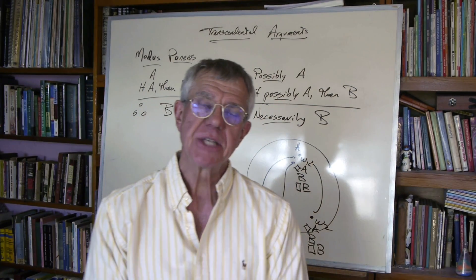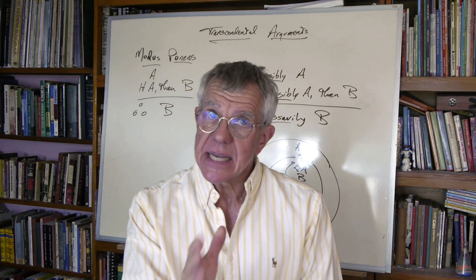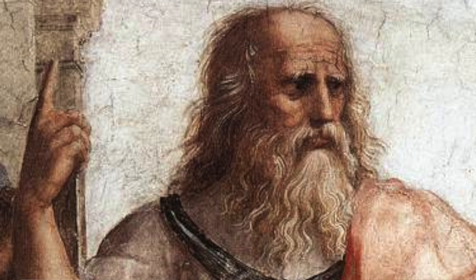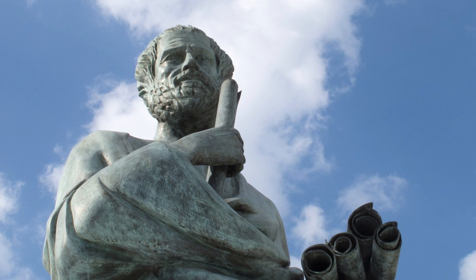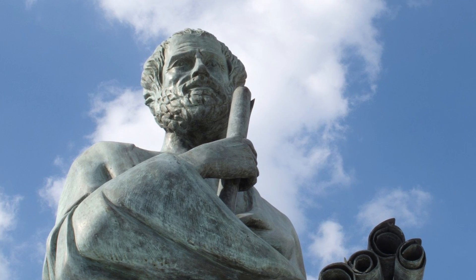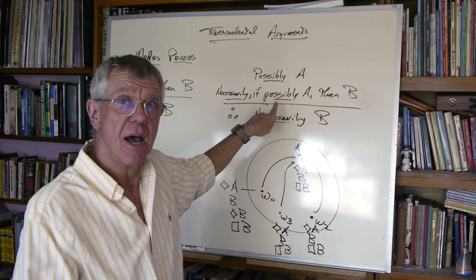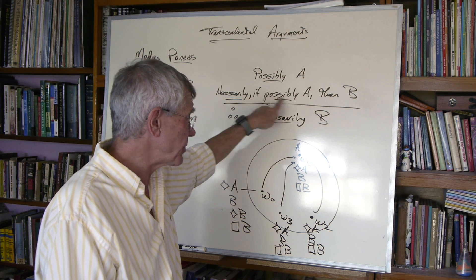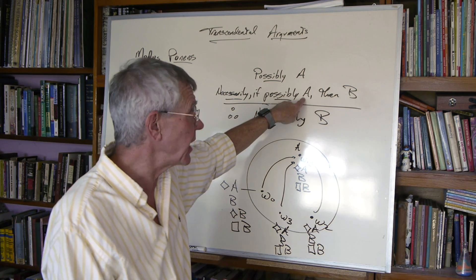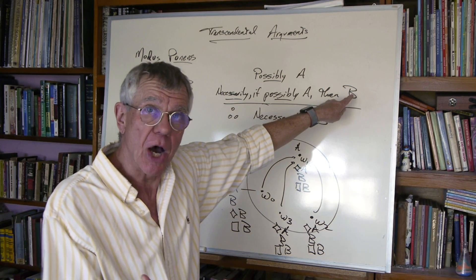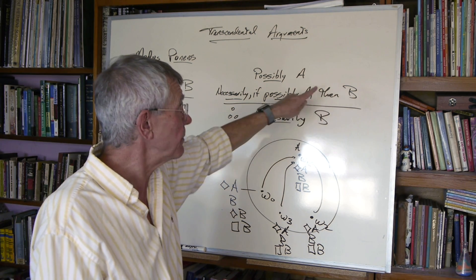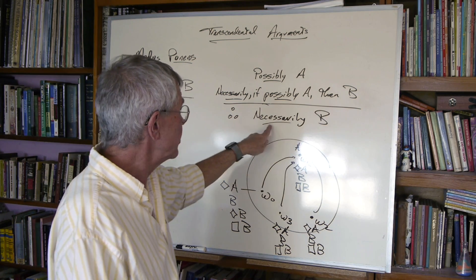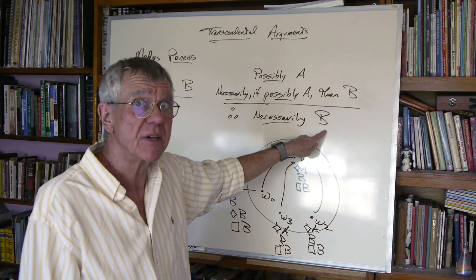We can back up in time. A similar form of argument appears in Plato, where he's thinking: it is possible for me to categorize things, for me to recognize something as a triangle, for example. But what are the necessary conditions for the possibility of recognizing something as a triangle? If it's possible for me to see that thing as a triangle, I must be able to apprehend the concept of triangularity — and I can have it only by apprehending triangularity itself. So necessarily, I apprehend the Form of triangularity.